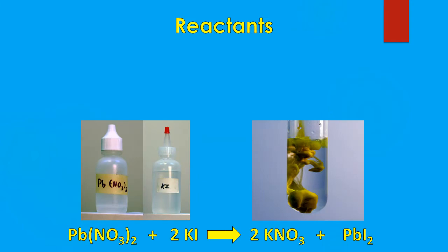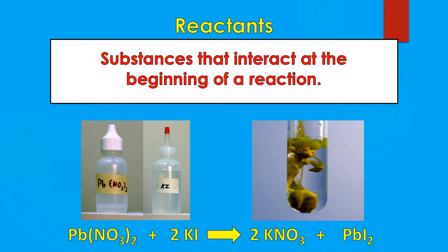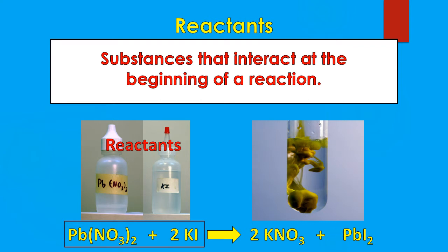So we have reactants in a chemical equation or in a reaction. The reactants are the substances that interact at the beginning of the reaction — the substances we start with — and these substances are always going to be found on the left side of the equation. This will be our left side, and this will be our right side. So on the left side of this arrow, everything will be called reactants.